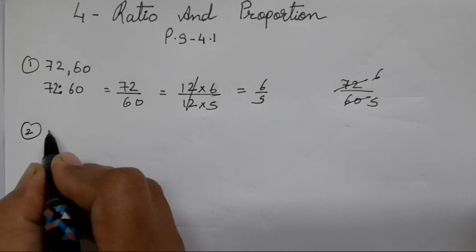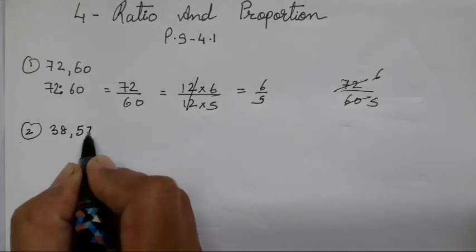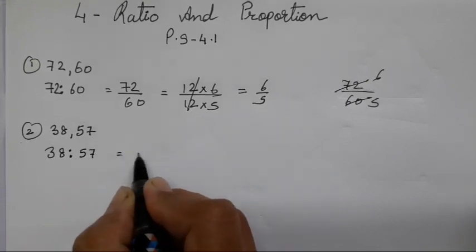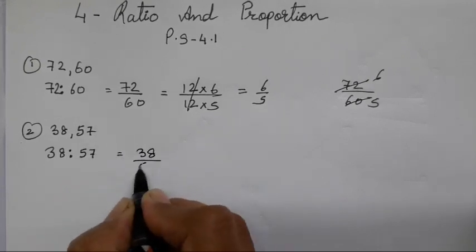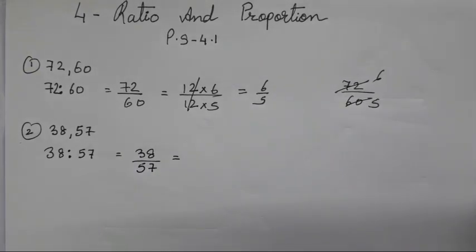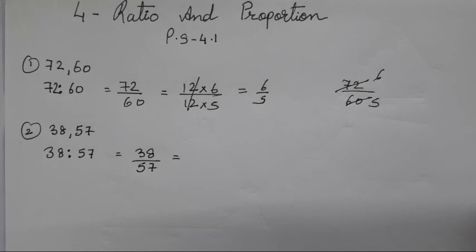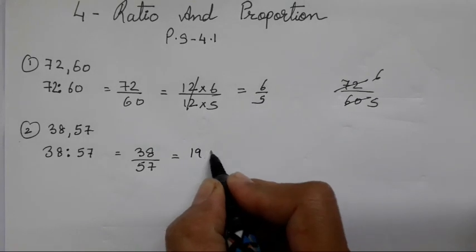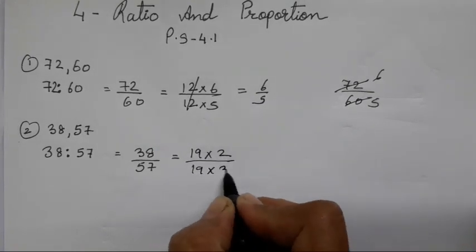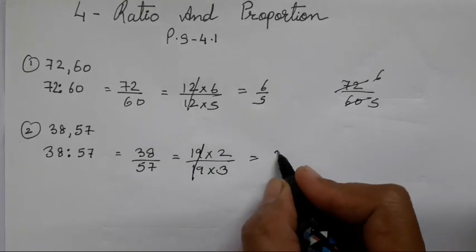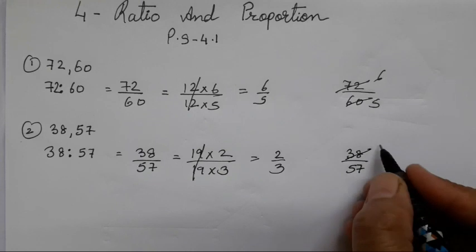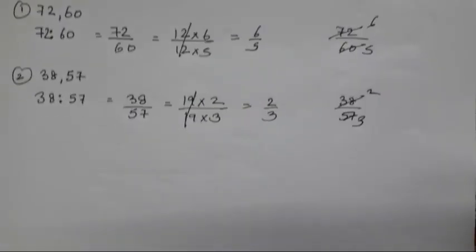The second one is 38 as to 57. Write it in ratio form: 38 upon 57. If you are good at tables you will easily be able to divide it. If not, you can divide using smaller numbers. 19 twos are 38 and 19 threes are 57 — so 19 will get cancelled, giving 2 upon 3. In this way you can reduce it: 19 twos are 38, 19 threes are 57.